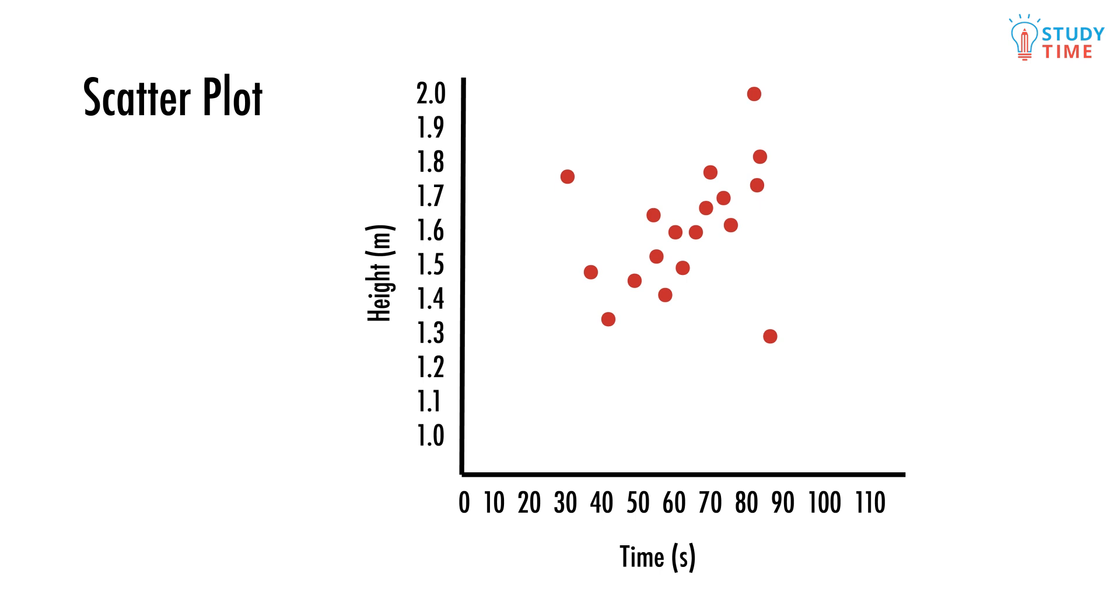Say you took measurements of a whole bunch of runners, and on the x-axis you had a scale for the time they took to finish a race, and on the y-axis you had their height.